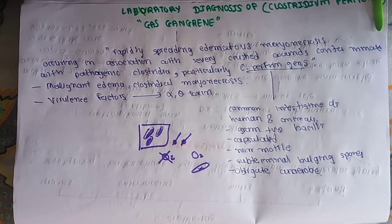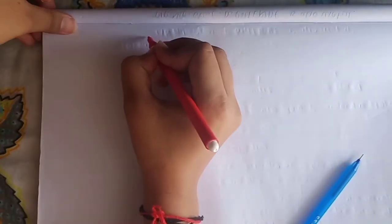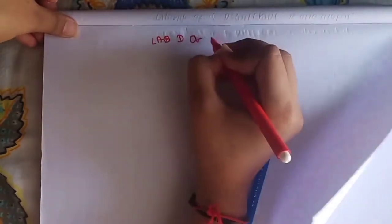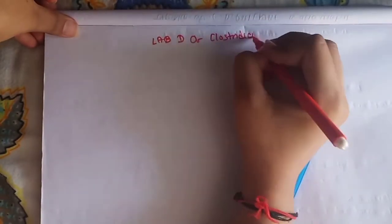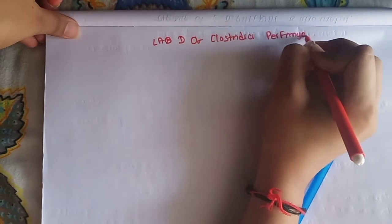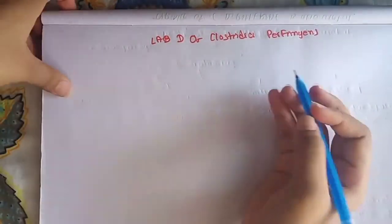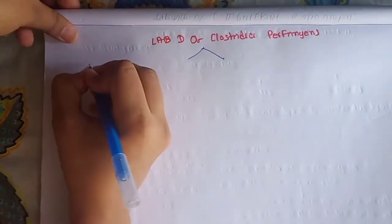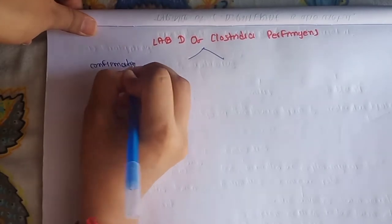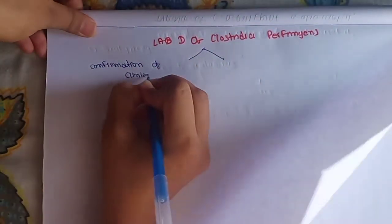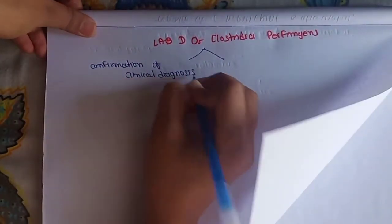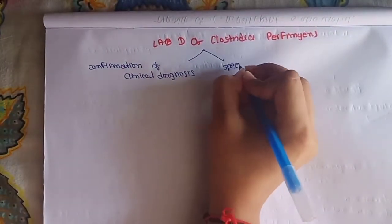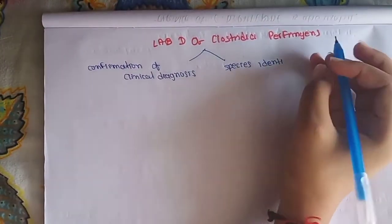Let's have a look on the laboratory diagnosis of Clostridium perfringens. This laboratory diagnosis of Clostridium perfringens is only useful for the confirmation of clinical diagnosis and the species identification, because gangrene or clostridial infections are mostly polymicrobial.